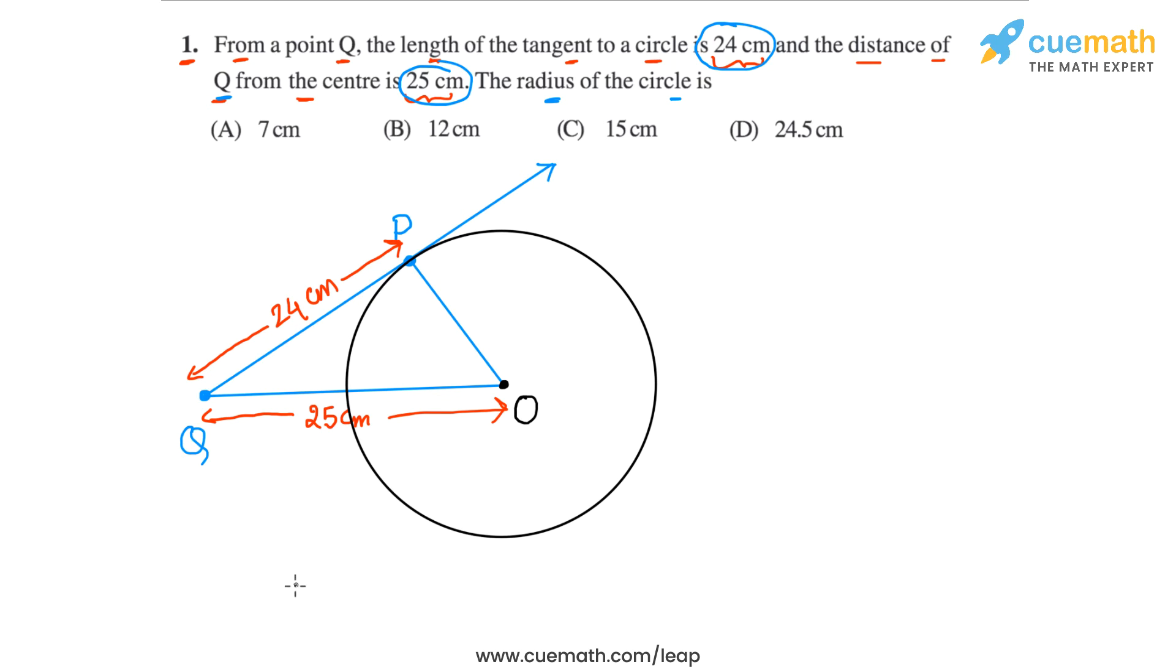Because OP is perpendicular to PQ, so this angle here is 90 degrees. And that's because the tangent at the point of contact, the tangent is perpendicular to the radius through that point of contact.